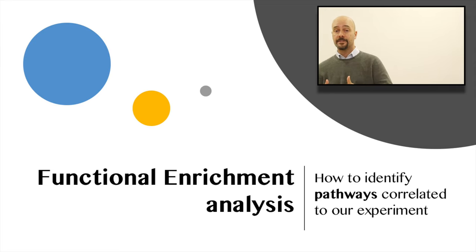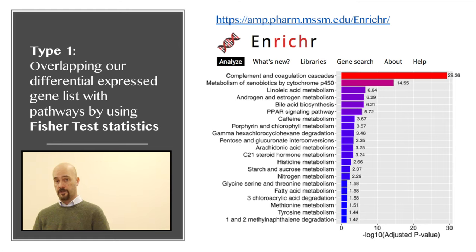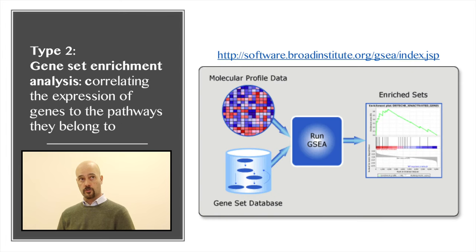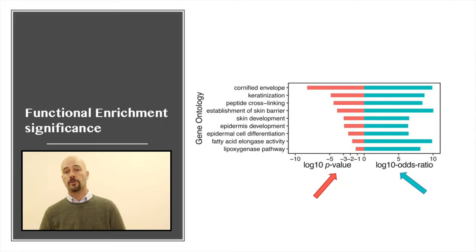In order to identify pathways which are correlated to our experiment, we have to apply functional enrichment analysis. In the first type of enrichment analysis, we try to overlap our differentially expressed genes with pathways, and for that we use Fisher's exact test statistics. And the second way of doing that is what is called gene set enrichment analysis, which tries to correlate gene expression at the level of genes with their belonging to different pathways. Of course, at the end, we're going to have p-values and false discovery rates applied, in this case, not to single genes, but to groups of genes, like pathways or processes.